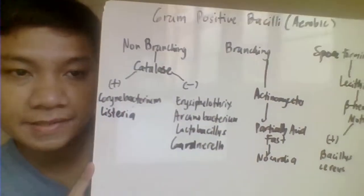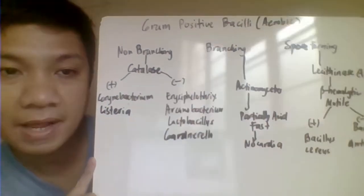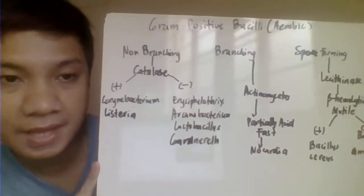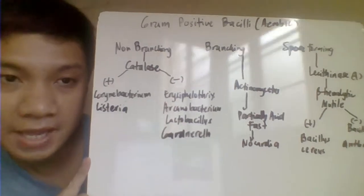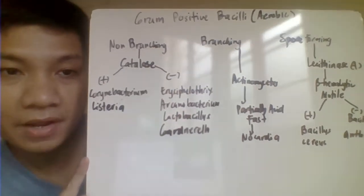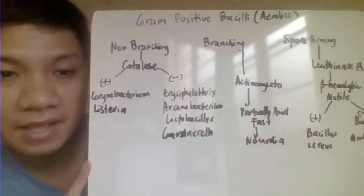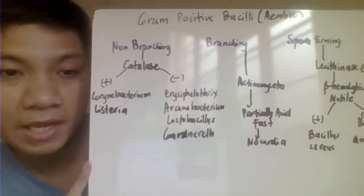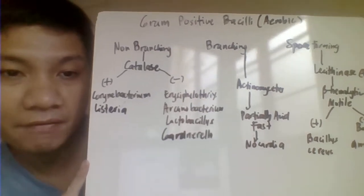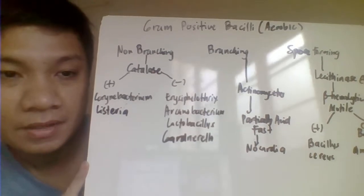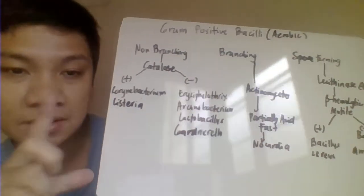Today we're going to discuss the gram-positive bacilli. We have already discussed all the cocci related to your gram-positive. So today we have here your gram-positive bacilli, which are aerobic. By saying bacilli, they have the elongated shape.